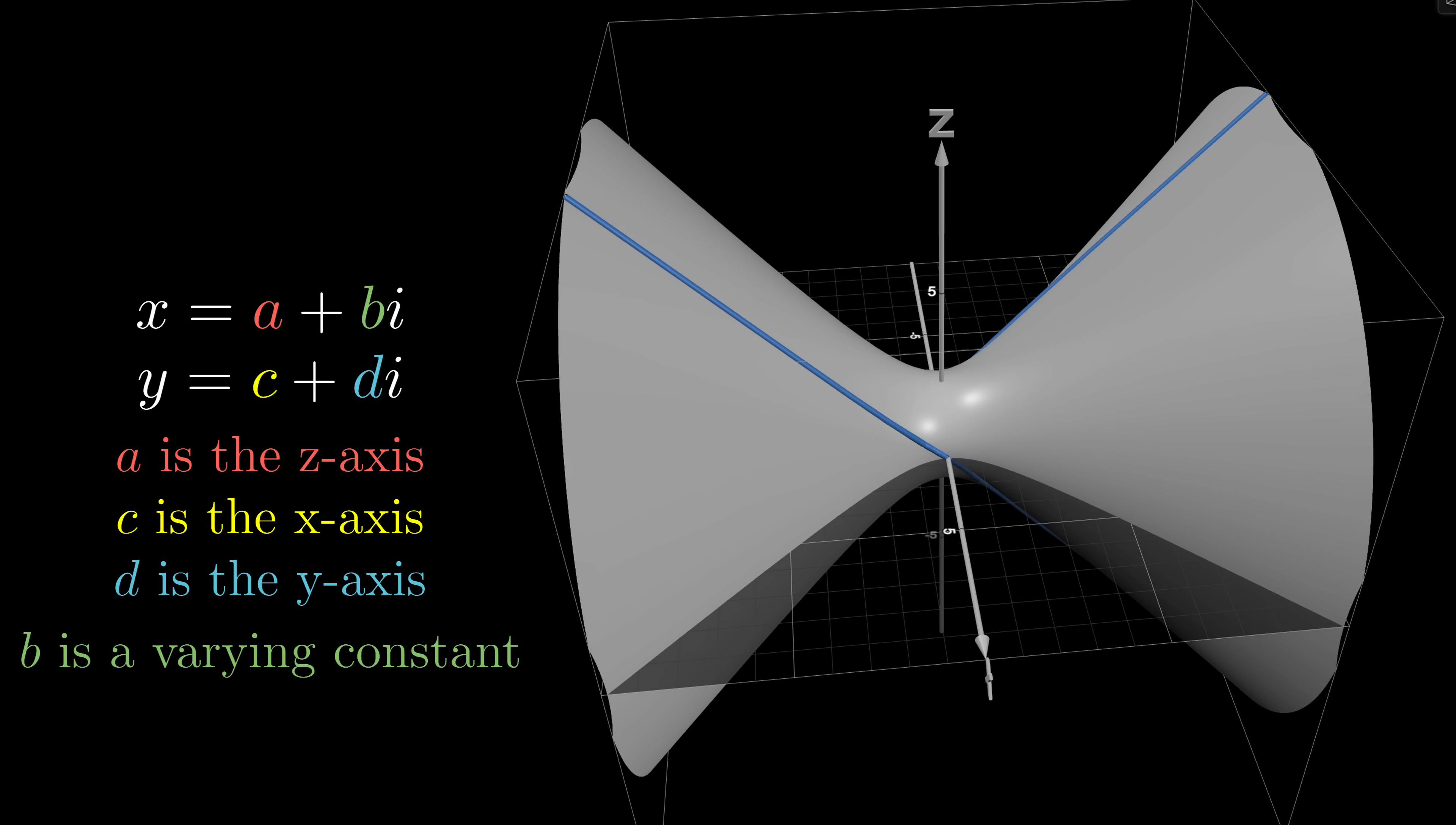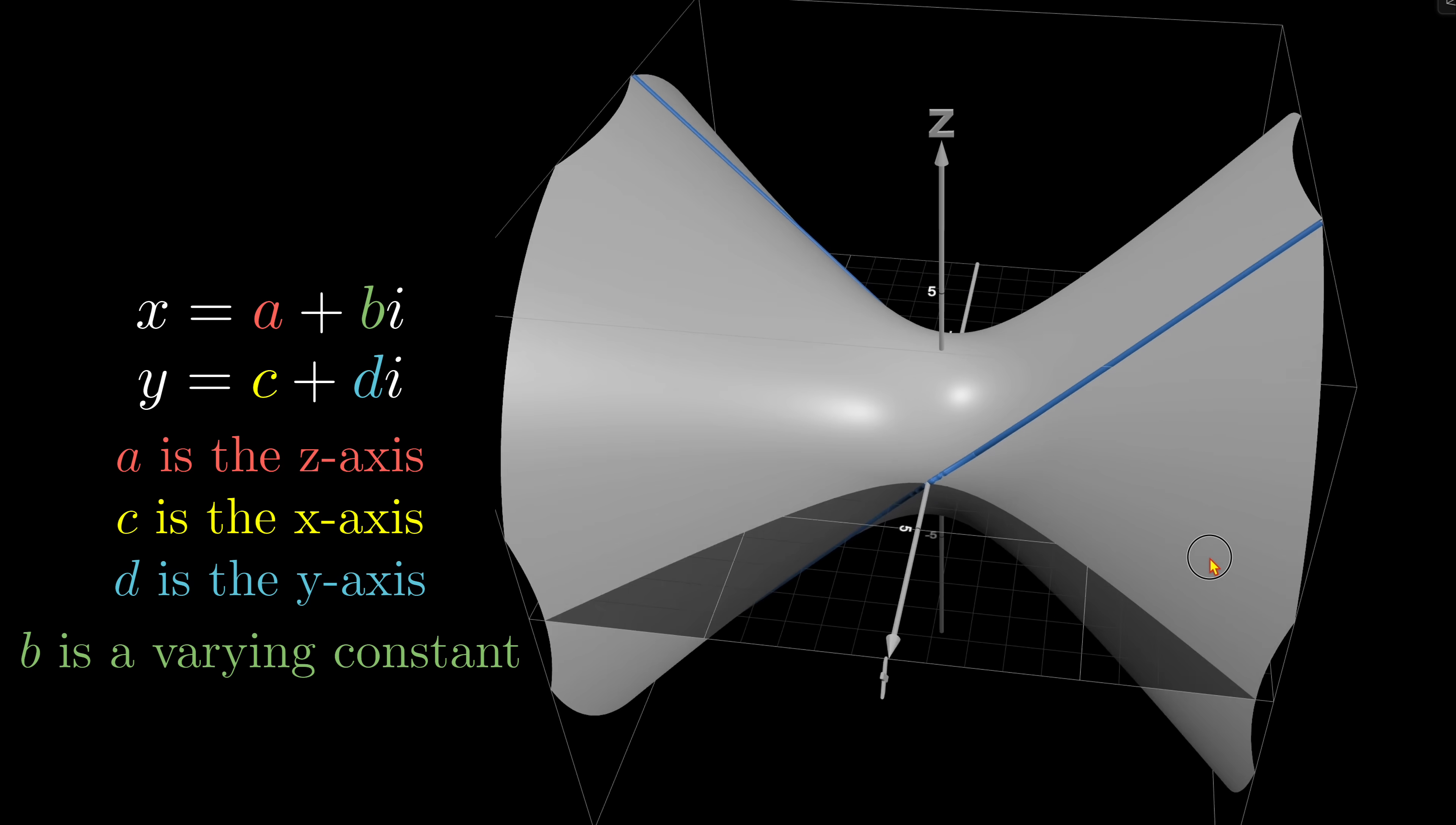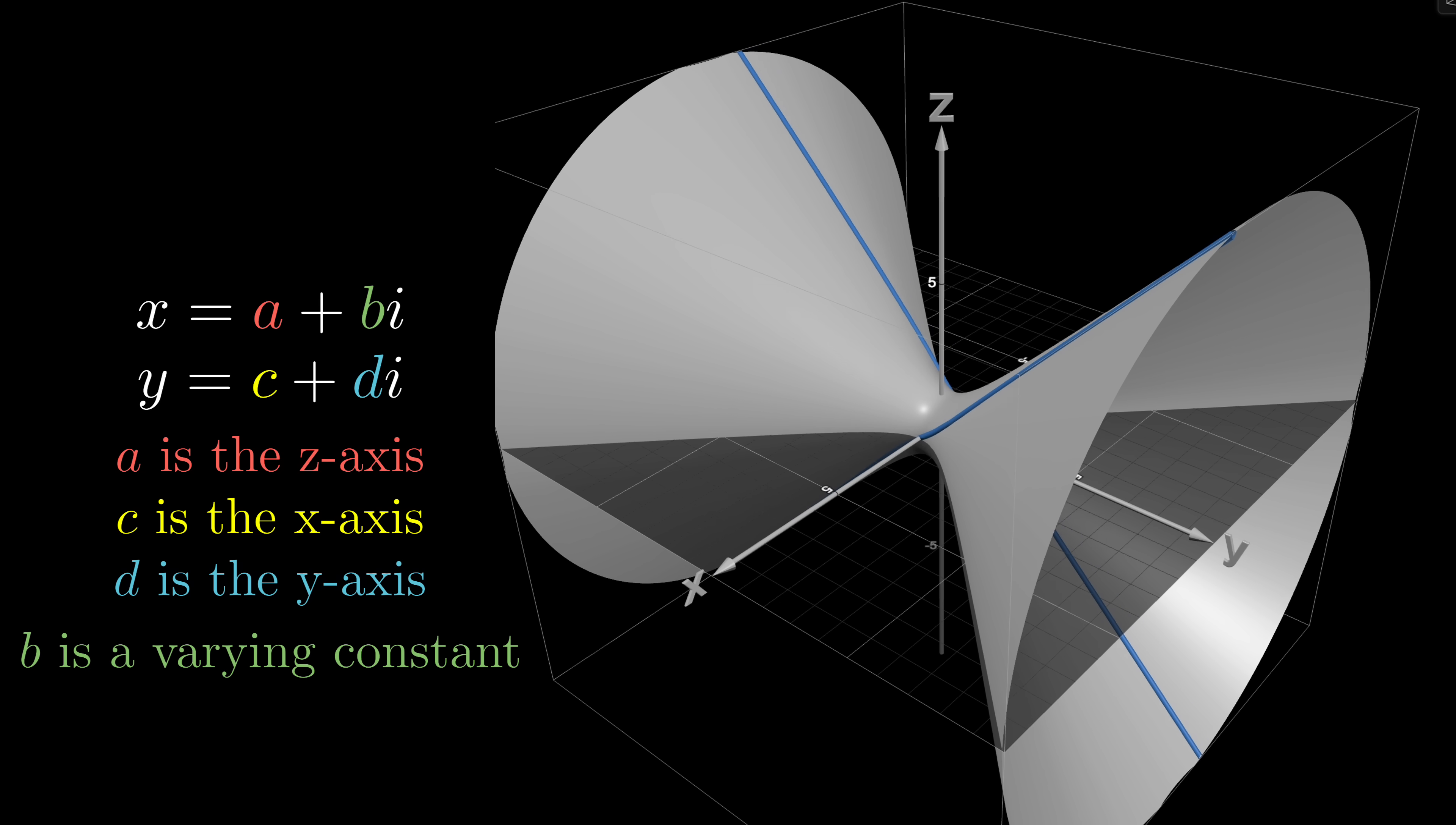In this animation, the gray surface is defined by the real part of the equation. The blue lines are the actual intersection of the real part surface and the imaginary part surface.